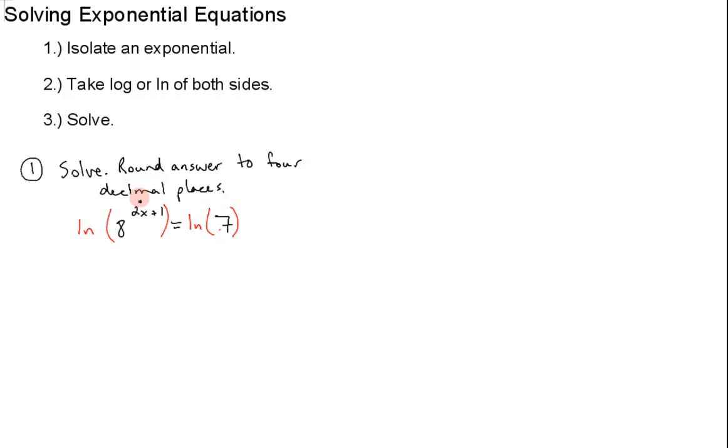So, now, on the left side, we apply the logarithm law that tells me that I can move the exponent here down to the front. So, we have 2x plus 1 times the ln of 8 equals the ln of 7.